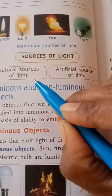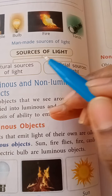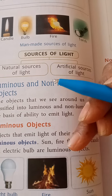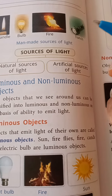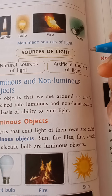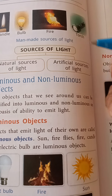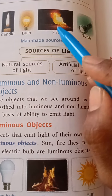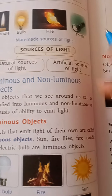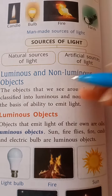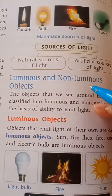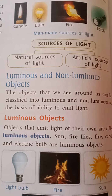Natural sources — like the sun, moon, and stars — produce light naturally. And artificial means man-made sources. So the next point is luminous and non-luminous objects.